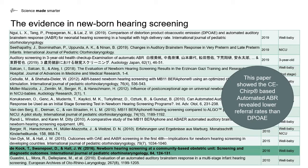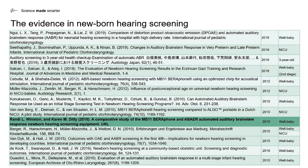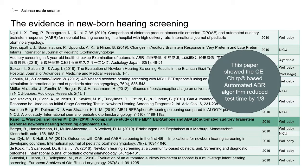The last study I want to highlight addressed test time when using CE CHIRP-based algorithms as opposed to non-CE CHIRP-based algorithms for detecting the automated auditory brainstem response. What this study showed was that by using the CE CHIRP and benefiting from the larger response amplitudes, this resulted in a test time which was reduced by one third when compared to algorithms which used click responses.